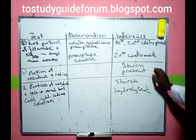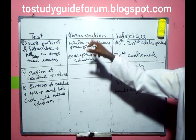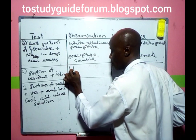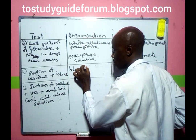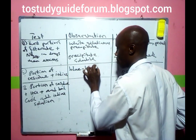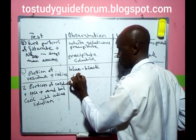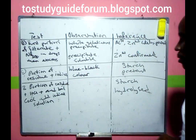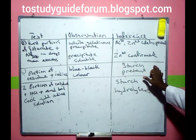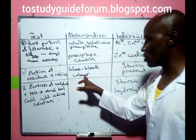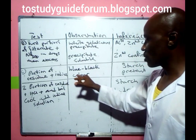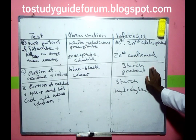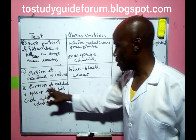Moving to the residue: one portion of the residue is tested with iodine solution. Since starch is present, the observation will be a blue-black color. A blue-black color confirms the presence of starch, because iodine solution reacts with starch to give a blue-black color.